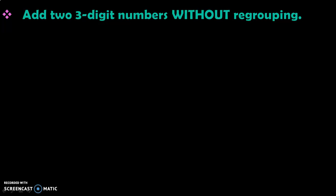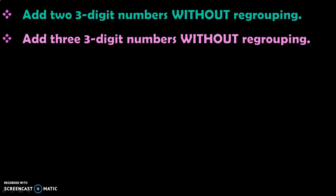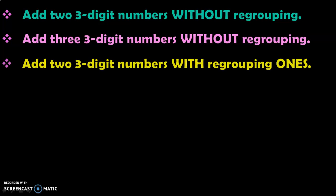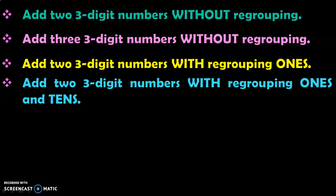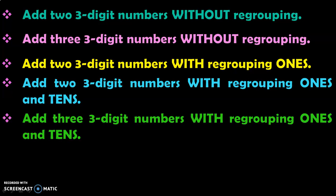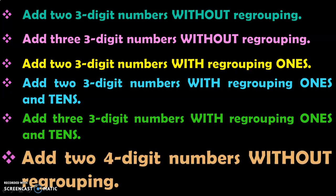First, we will be seeing addition of two three-digit numbers without regrouping. Then, we will be dealing with adding three three-digit numbers without regrouping. Next, we will look into adding two three-digit numbers with regrouping ones. Next, we will deal with adding two three-digit numbers with regrouping both the ones and the tens. Next, we will deal with adding three three-digit numbers with regrouping ones and tens. Then, we will take up adding two four-digit numbers without regrouping. Once we finish all these topics as a quick revision, doing this final topic will become very easy for the children.